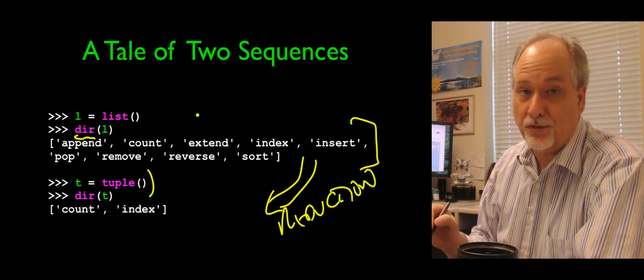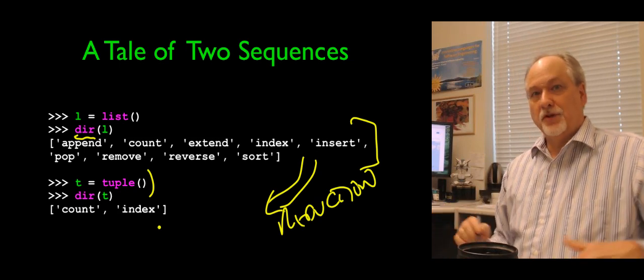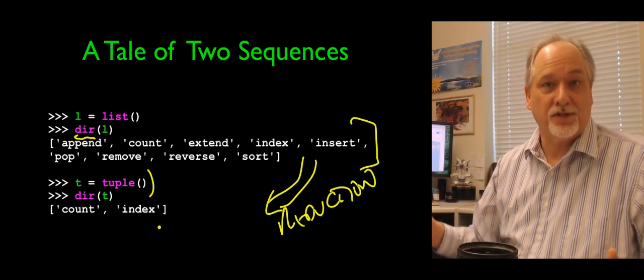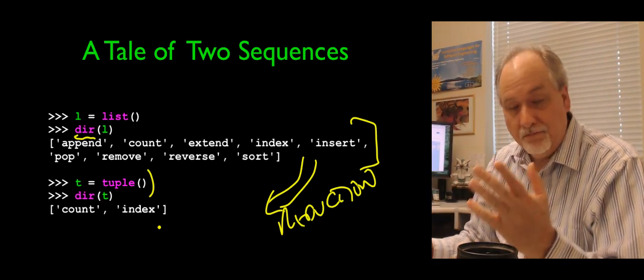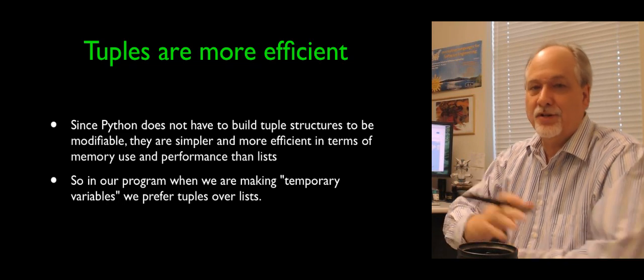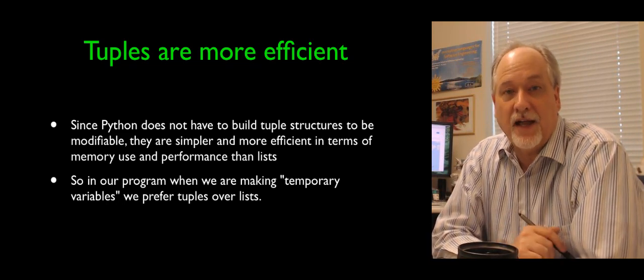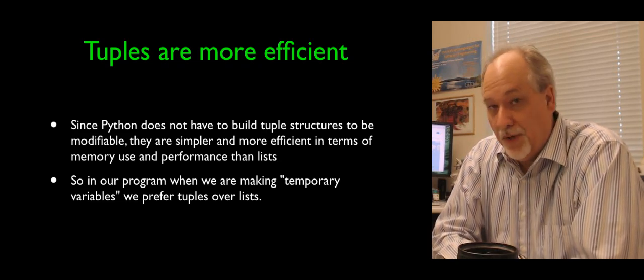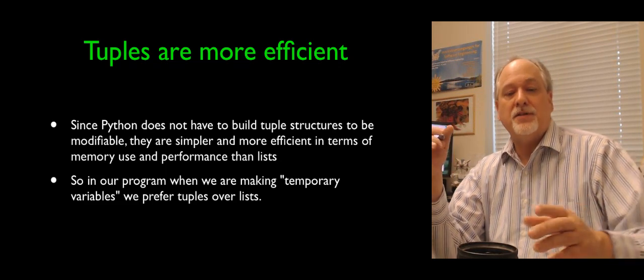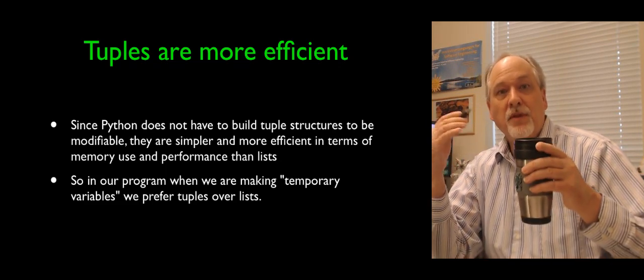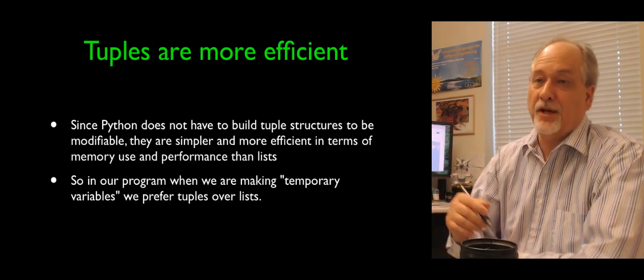Because everything you can do with tuples, you can do with lists. But not everything you can do with lists, you can do with tuples. So why? Why did I just waste all this time introducing tuples? What good are they? Well, it turns out that they're much more efficient. Because Python doesn't have to deal with the fact that we as programmers might change them. Python can make them quicker. They can use less memory, all kinds of things that save a lot of processing time in Python.